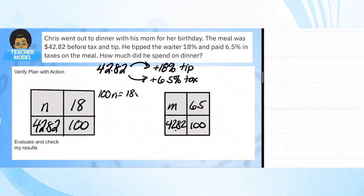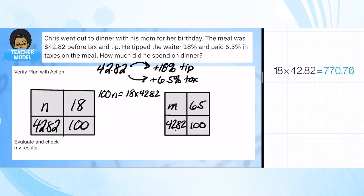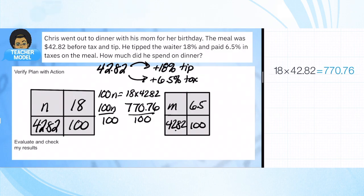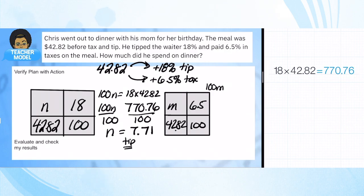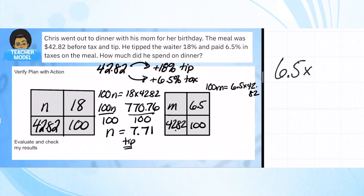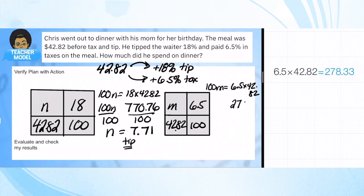For the tip: 100n = 18 × 42.82, which gives us 770.76. Dividing by 100, n = $7.71 — that's how much tip he would pay. For the tax: 100m = 6.5 × 42.82, which gives us 278.33. Dividing by 100, our tax is equal to $2.78.